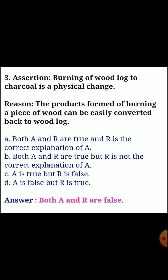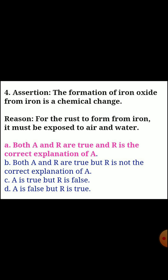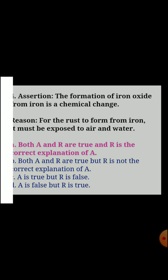Question three: assertion - burning of wood to form charcoal is a physical change. Reason - the products formed by burning a piece of wood can be easily converted back to wood. Answer: both assertion and reason are false. Question four: assertion - the formation of iron oxide from iron is a chemical change. Reason - for rust to form from iron, it must be exposed to air and water. Answer: both assertion and reason are true and the reason is the correct explanation of the assertion.